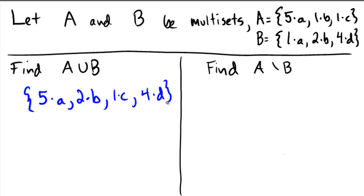How about A subtracted by B, the set difference here? So now in the top, we have five copies of A, but we are subtracting out one copy of A. So what's that going to leave us with but four copies of A in the multi-set. Now we have one copy of B in the A set, and in B we're subtracting two copies of B. So we had one and we subtracted two.